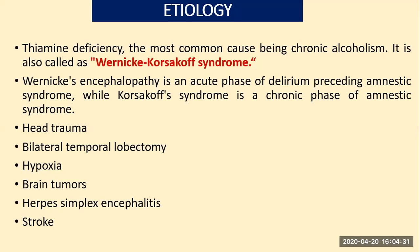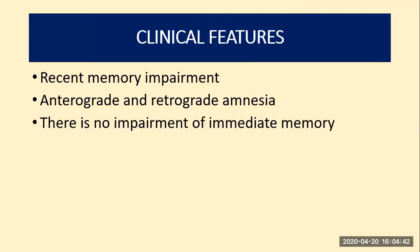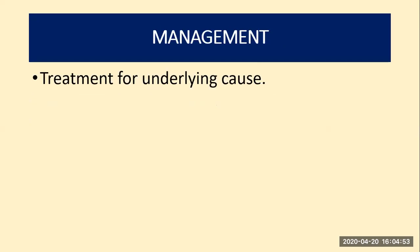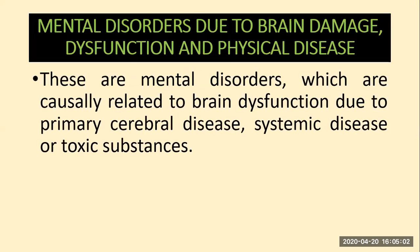Other causes of organic amnestic syndrome include head trauma, bilateral temporal lobectomy, anoxia, brain tumors, herpes simplex encephalitis, and stroke. Clinical features include present memory impairment — anterograde or retrograde amnesia — with no impairment of immediate memory. Management is the same: treatment for the underlying causes. You need to identify and treat the patient accordingly for the memory loss.